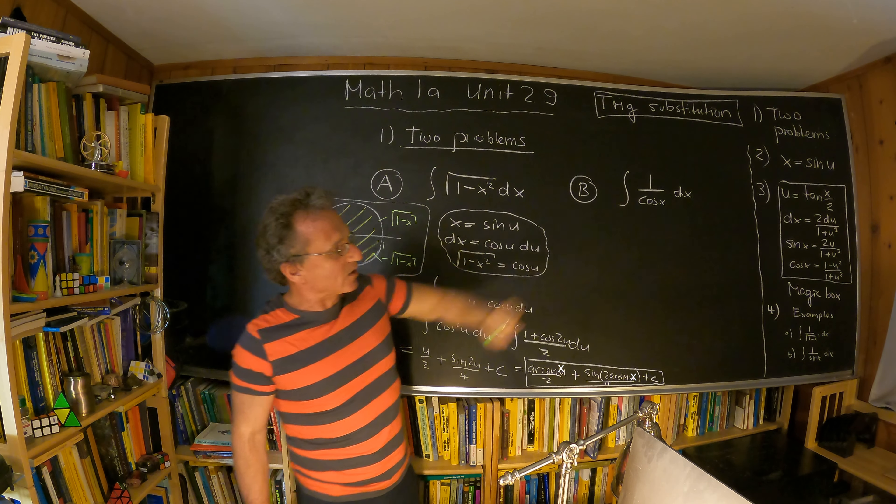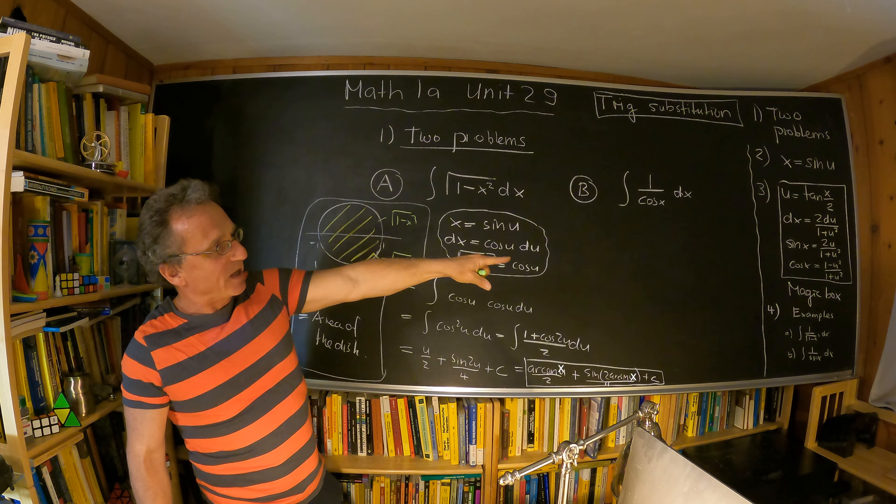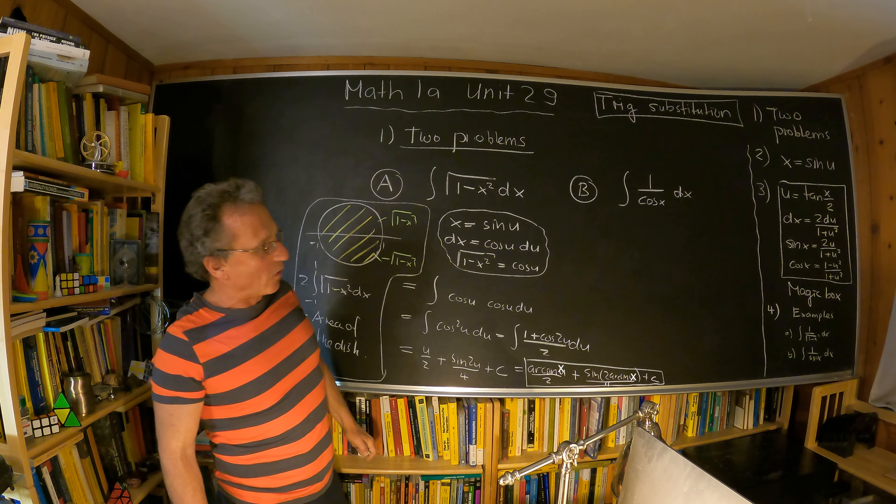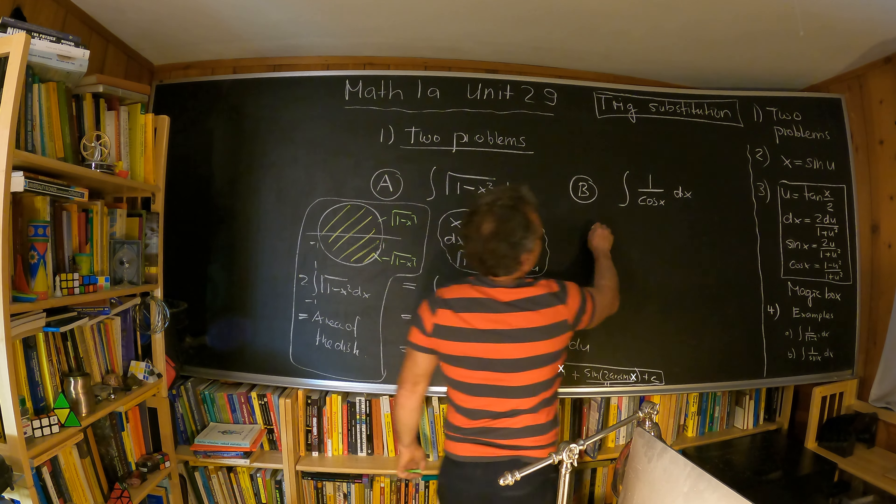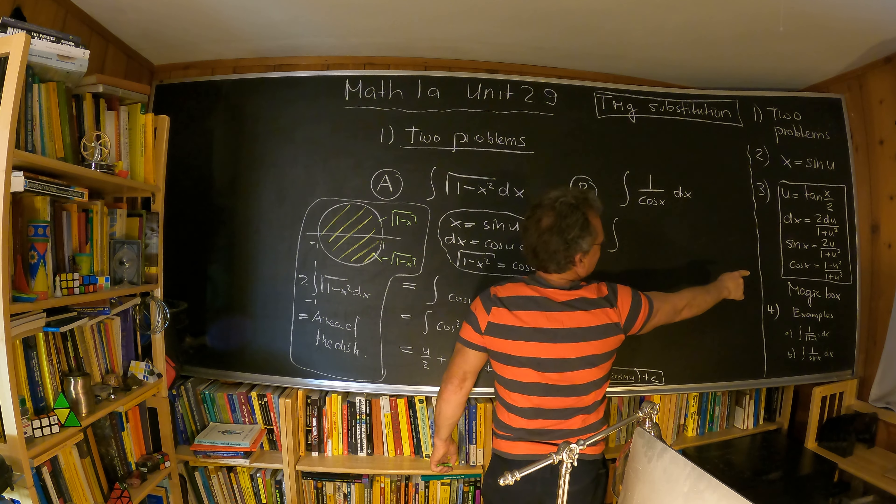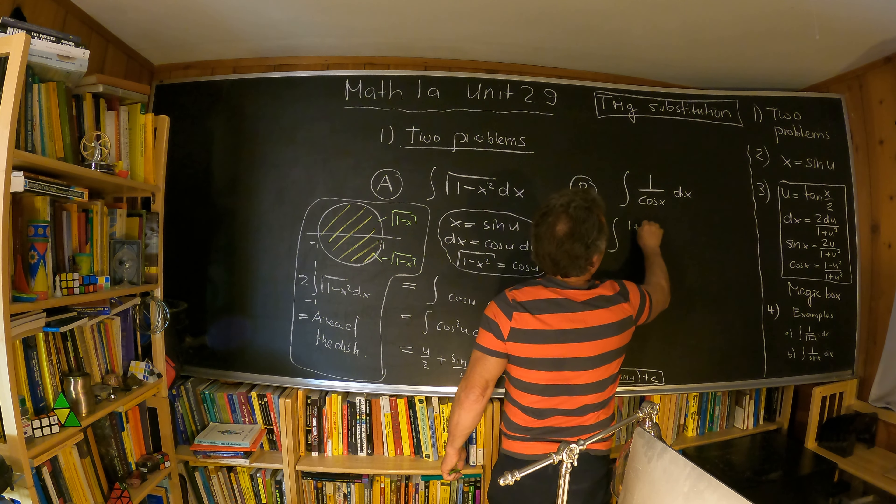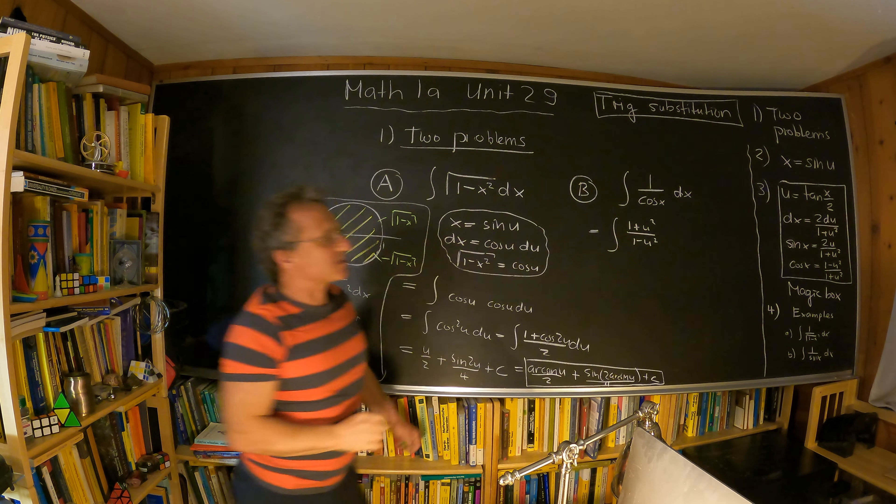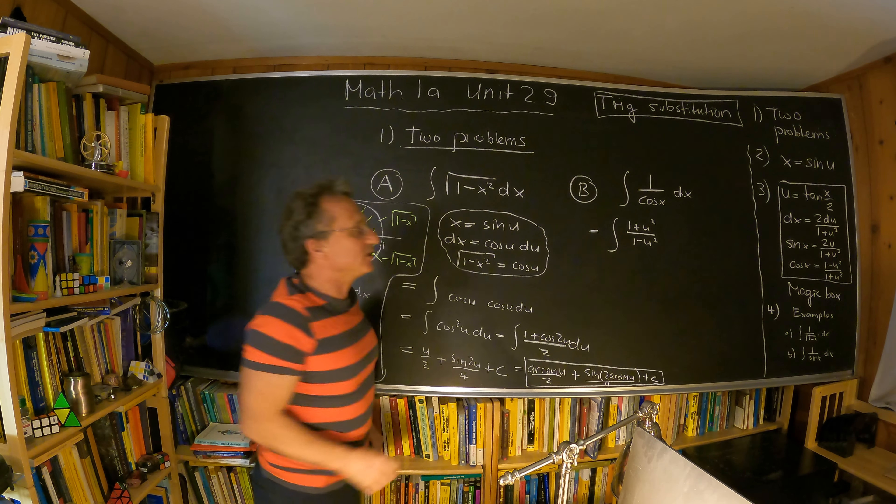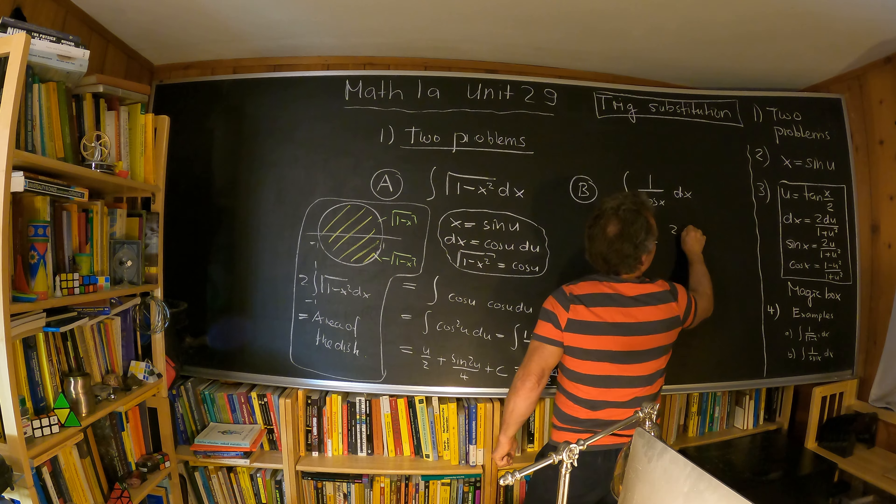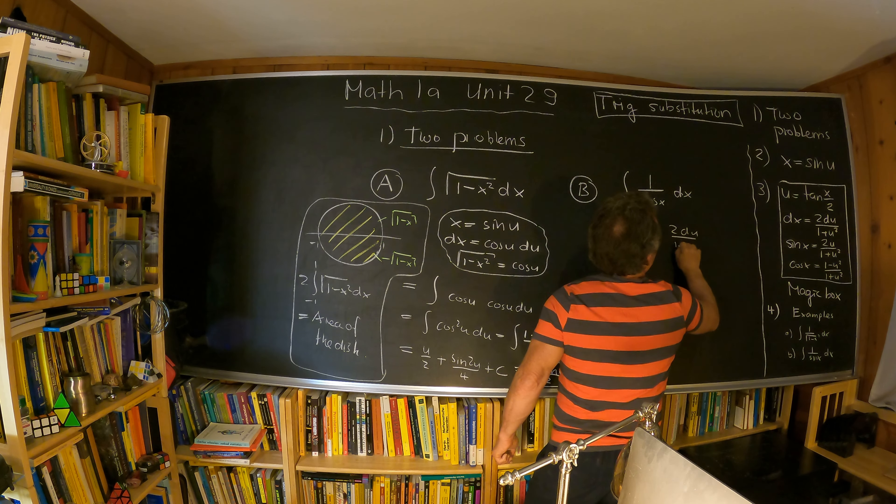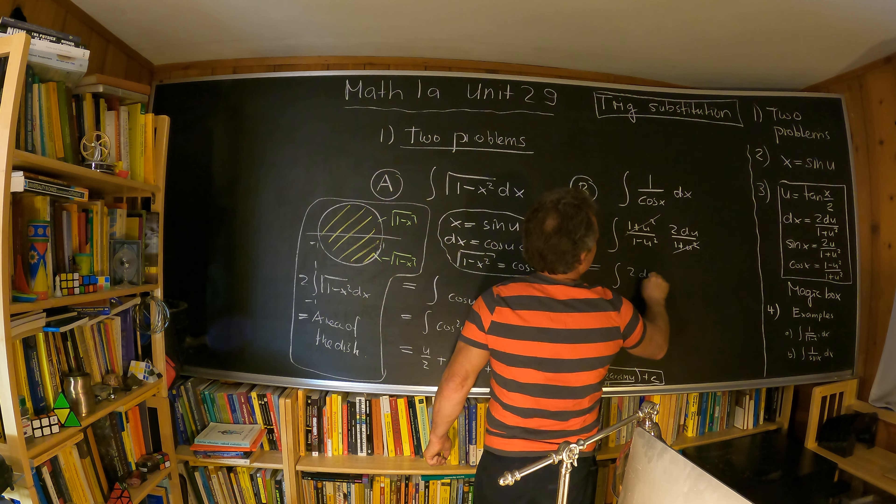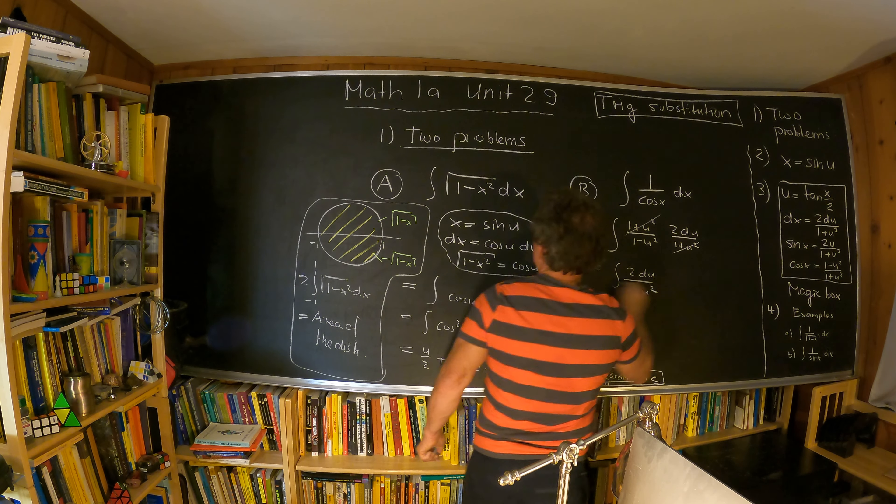So what we do is we just replace the cosine x with one minus u square over one plus u square. So what we have is, if we do that, one over cosine x is then just one plus u square over one minus u square. And the dx becomes 2 du over 1 plus u square. That cancels away and we have 2 du over 1 minus u square.